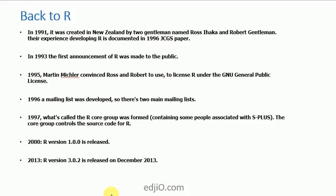In 1996, a mailing list was created, consisting of R-help and R-devel. R-help is a general mailing list for questions, and R-devel is a more specific mailing list for people doing development work in R. In 1997, what is called the R Core software group was formed. It contained many of the same people who developed S Plus, and the core group basically controls the source code of R — it can only be modified by members of the R Core group. However, a number of people outside the core group have suggested changes that have been accepted.